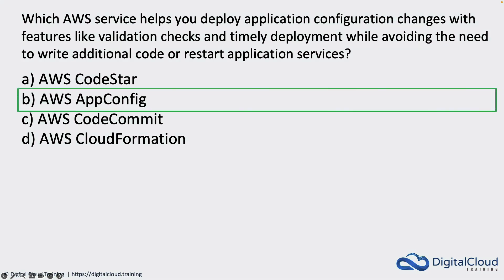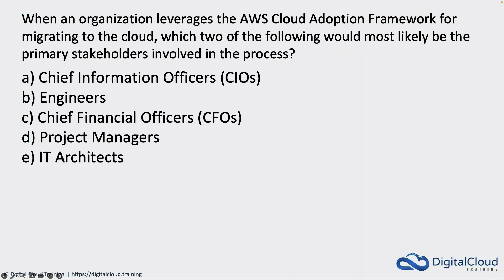Let's understand the other options too. CodeCommit is a source control service — it's about committing code, similar to Git or GitHub. CloudFormation is for deploying infrastructure — you write infrastructure as code and deploy that infrastructure using CloudFormation. Those are not the right answers here.